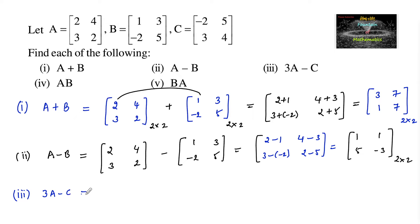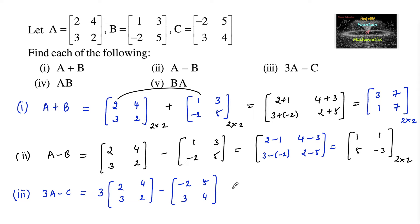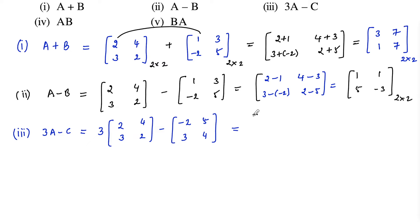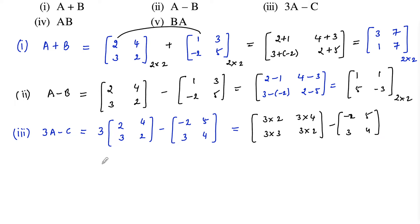The third one is 3A minus C. We compute 3 times matrix A, which is 2 4 3 2, minus matrix C which is negative 2 5 3 4. The scalar multiplication means we multiply 3 to each element of A, giving us 3×2, 3×4, 3×3, and 3×2, then subtract the matrix C with entries negative 2, 5, 3, and 4.